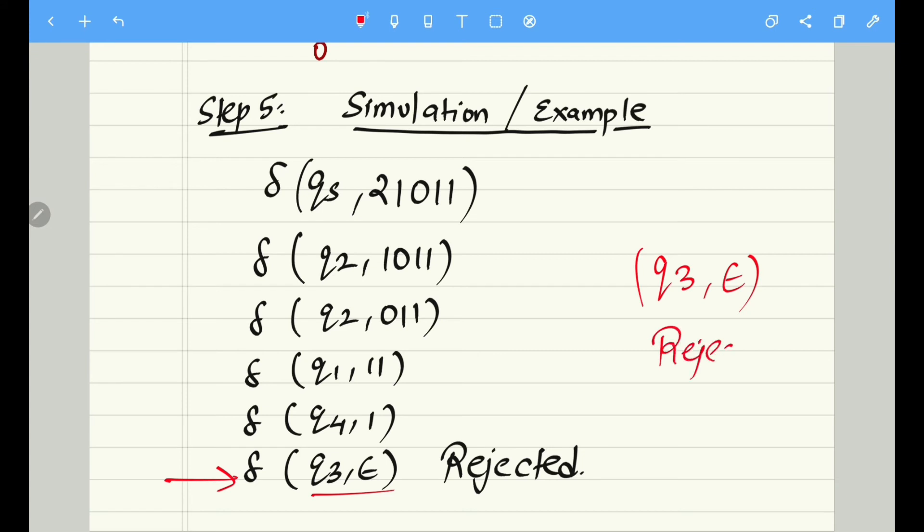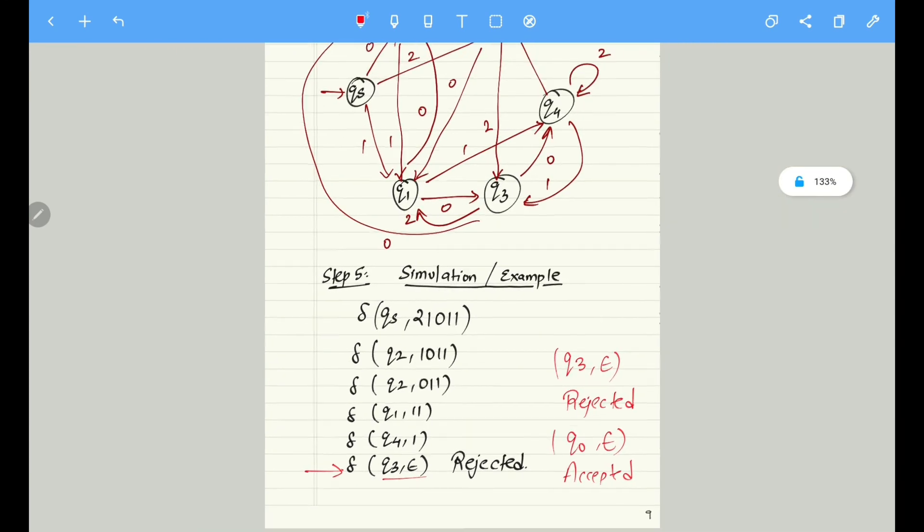Hence we can say that this particular string is not divisible by 5. If on the other hand we would have a state Q0 with epsilon inputs, then we would have accepted this particular state. But that is a different case, because we are not having such an input. We are having an input which is not divisible by 5, and hence we have got an answer Q3 in the final step.